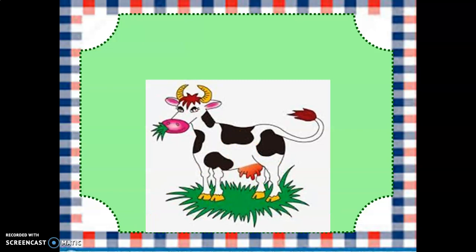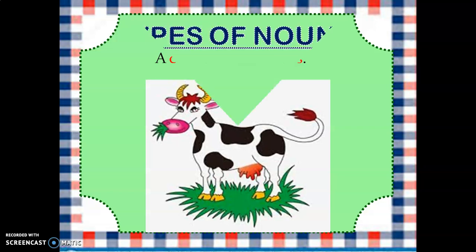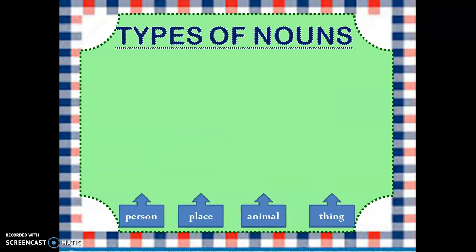One more picture — in this picture a cow is grazing grass. The sentence will be: 'A cow is grazing grass.' The nouns are cow and grass. Cow is an animal and grass is a thing. Now let's move forward and look at a few more examples of person, place, animal, and thing.